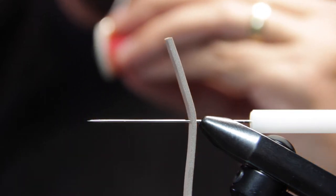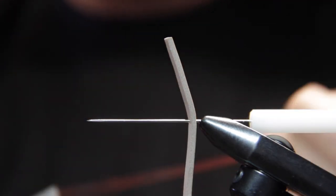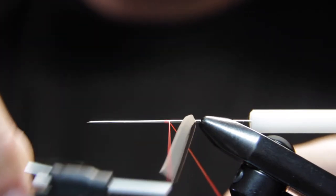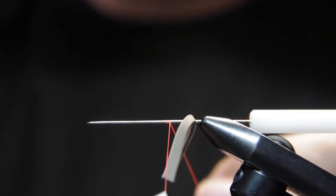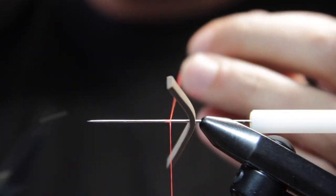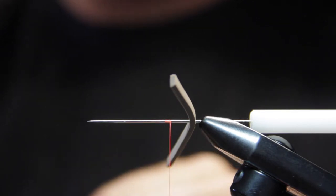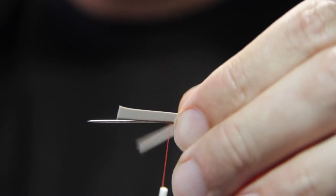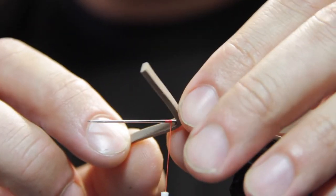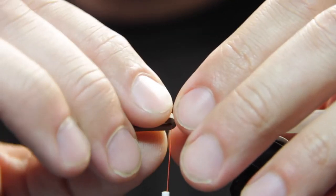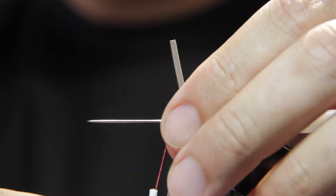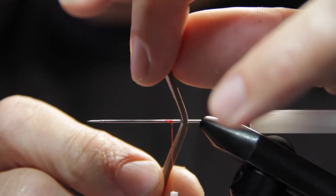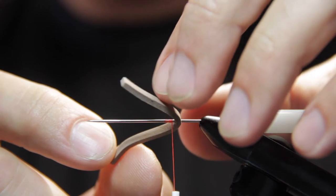So I'm going to use some orange thread here. We start the thread on our bodkin. We don't need to start a whole lot there, just like that. Now we're going to move our foam to where we've started that thread.